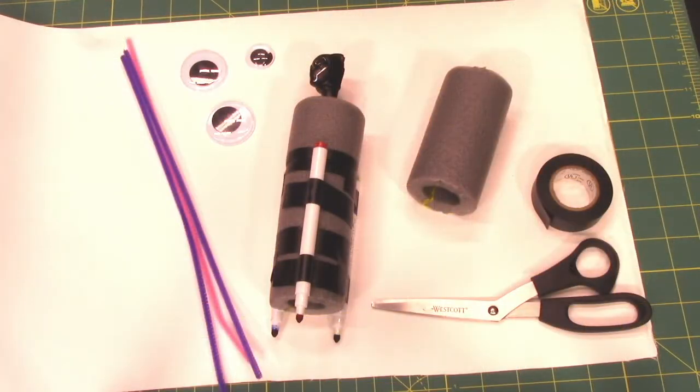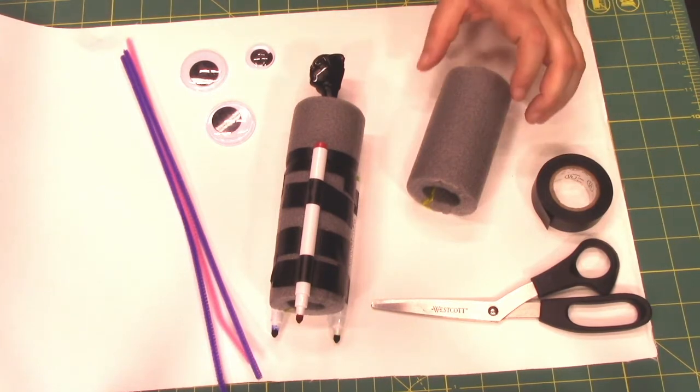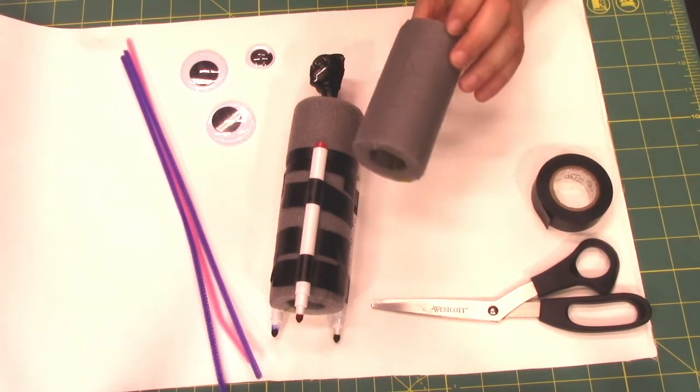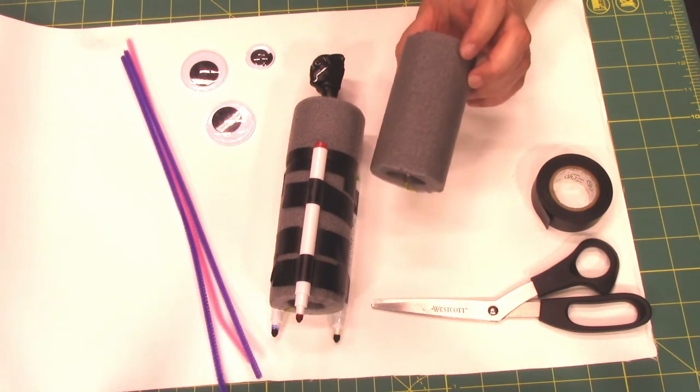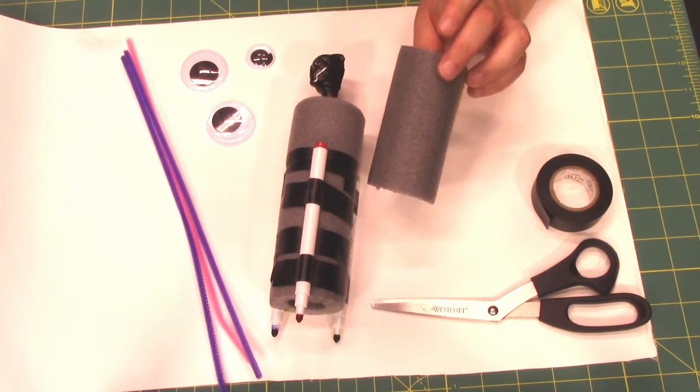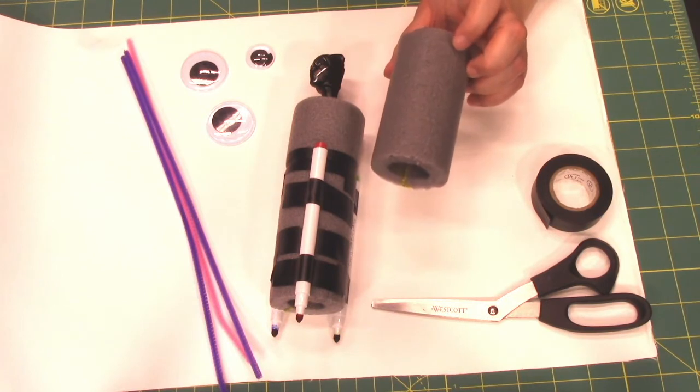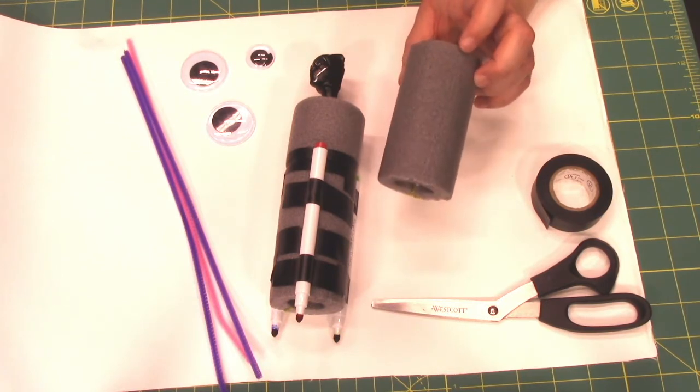So today I'm going to show you an alternate version of an art bot using supplies that you can find at a dollar store or a home store like Home Depot or Menards. So here's what you need to get started. You're going to need some kind of foam insulation. This is for, I think this is pipe insulation. You could also use a pool noodle if it's the right season to find pool noodles.